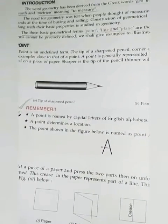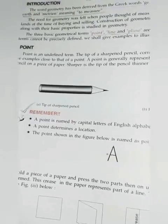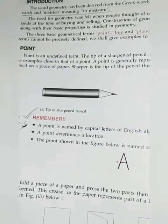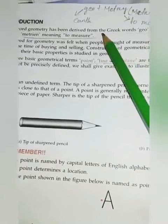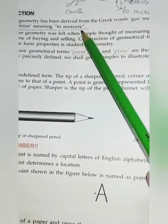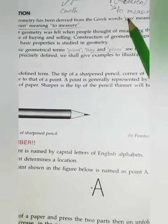Children, it is said that without geometry, life is pointless. Why? Let's see. The word geometry has been derived from the Greek word, that is, geo plus matri. Geo means earth and matri, the Greek word is matrin, means to measure.